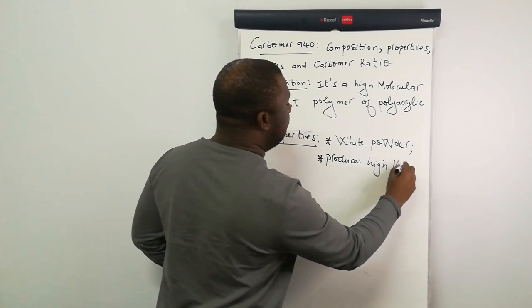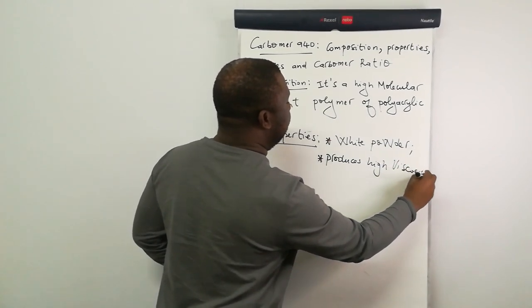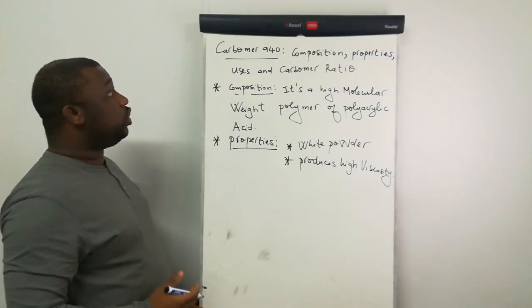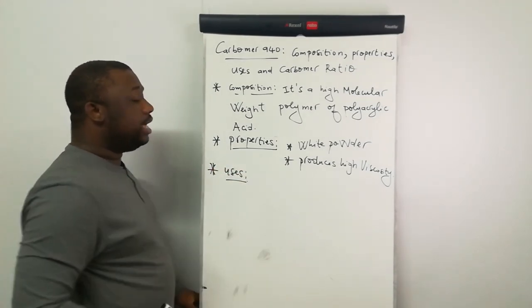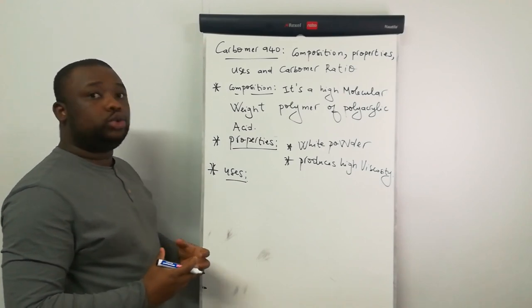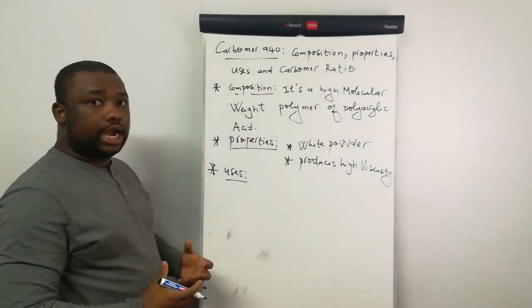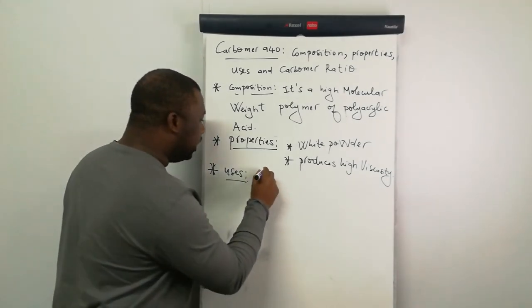The next point, let us talk of the uses. What is it used for? It's actually used to produce or make a gel, so we're going to say gelling agent.